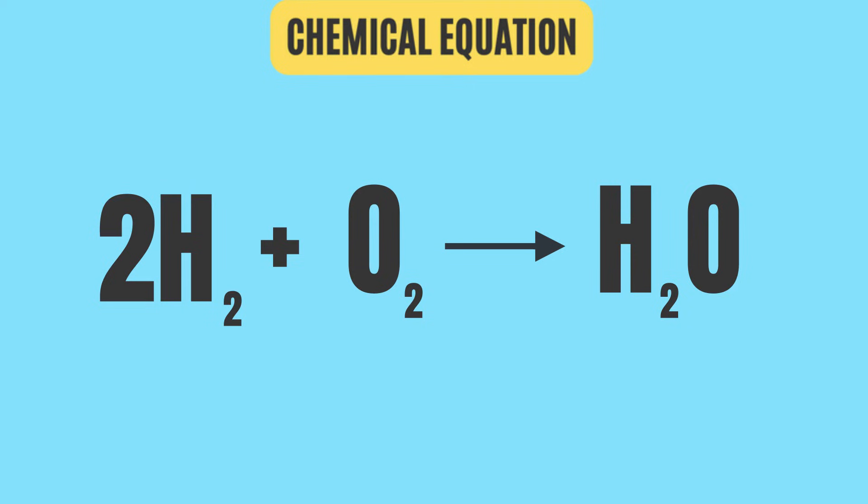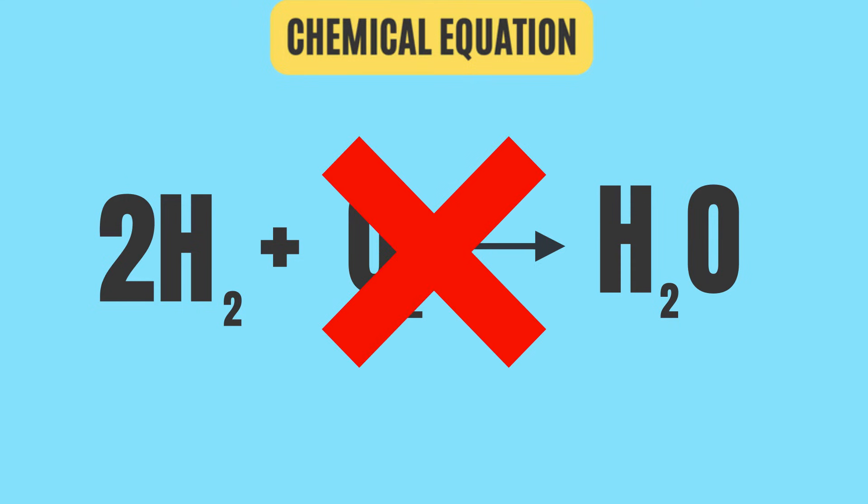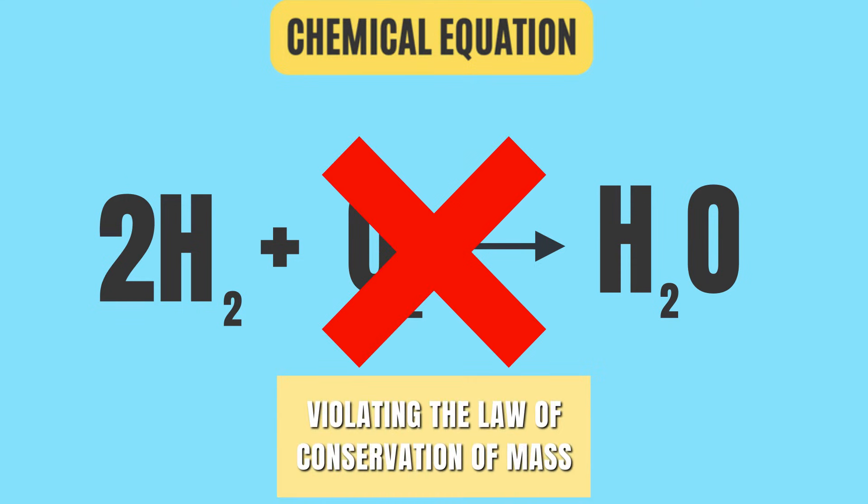If we do not balance a chemical equation, then this means that the chemical reaction is violating the law of conservation of mass, which is impossible.